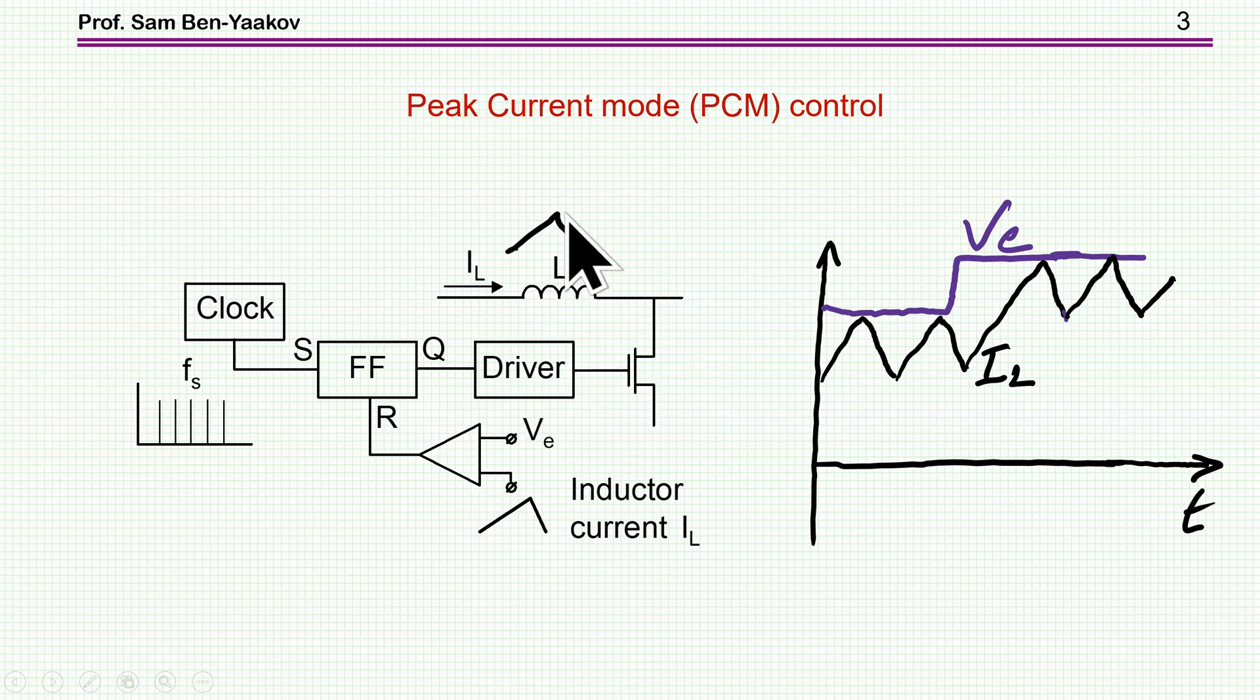The T_on time is determined by the time from the clock pulse to the time that the current is reaching the peak value. So if V_E, this reference is changing, then the peak will follow it. So this is in fact a current control, a current feedback that will force the current to reach this value. This is the peak value, not the average, but if the input and output voltages of the converter are about constant, then the difference between the peak and the average is fixed. So approximately, you can say that this is a current control of the average current too, although this is an approximation.